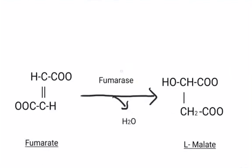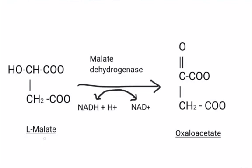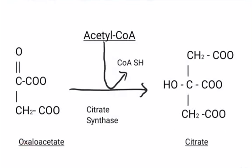Fumarate, in the presence of the enzyme fumarase, gets converted into L-malate. Here, one water molecule is released. Now L-malate, in the presence of the enzyme malate dehydrogenase, gets converted into oxaloacetate. Oxaloacetate is again introduced into the cycle and gets condensed with acetyl CoA in the presence of citrate synthase to form citrate, and the cycle restarts.